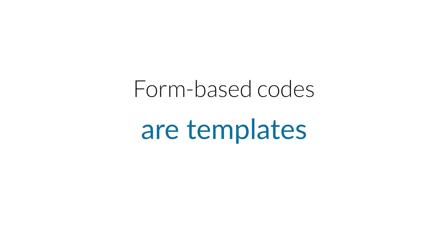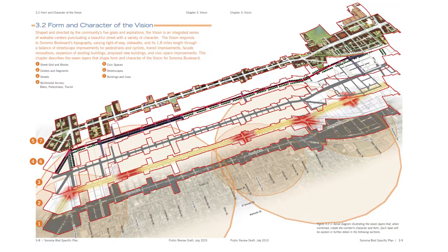The next misconception is that form-based codes are a template that makes you fit your community to it. I always like to say, no — that's conventional zoning. If you look at this diagram about the layers that make up urbanism — from the blocks that lots sit on, where buildings are, activity centers, streets, transit, bikes, pedestrians, and parks — all those are layers. We recognize these layers that make cities, and because we recognize them, we can apply rules to them and start to apply a community's vision.